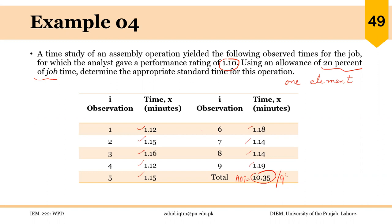It is quite possible that we had given a separate rating to each of the observations — say, 90% rating, 85%, and so on. In that case, we would take an average of these ratings and multiply that with the average observed time to find the normal time. That is something we will see in the next example.